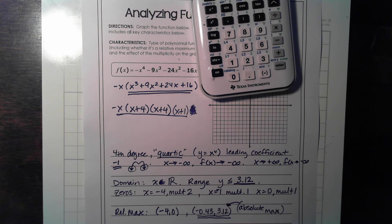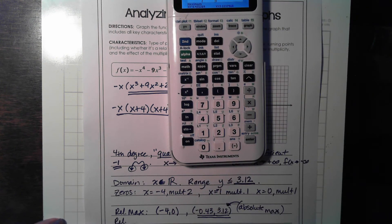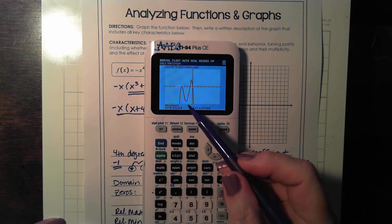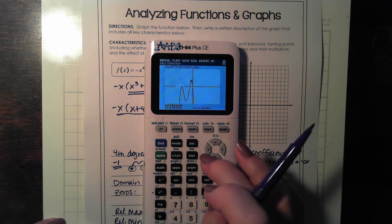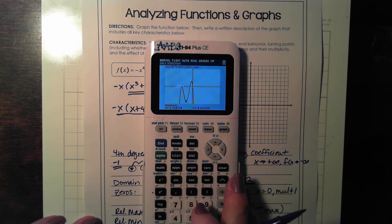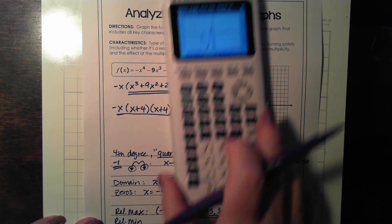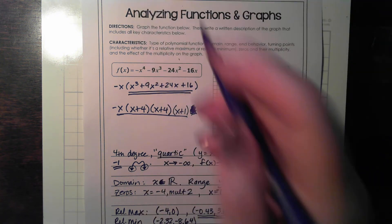So we need to find our relative minimum. And if we look at our graph, well, we have one relative minimum right here. So we're going to go second, calc, relative minimum is 3. Bring it over to the left of it, to the right of it, as close as we can. And we find that our relative minimum is at negative 2.32, comma, all the way down to negative 8.64.